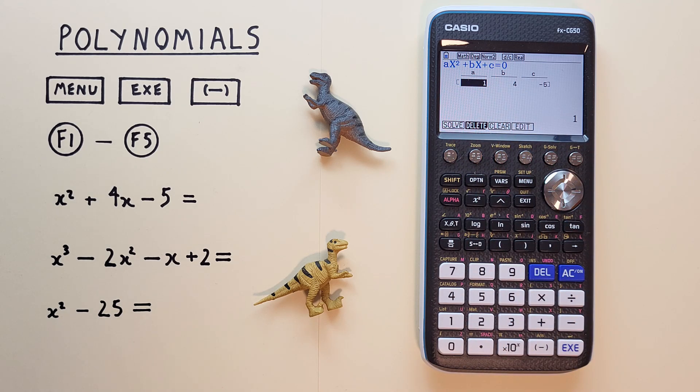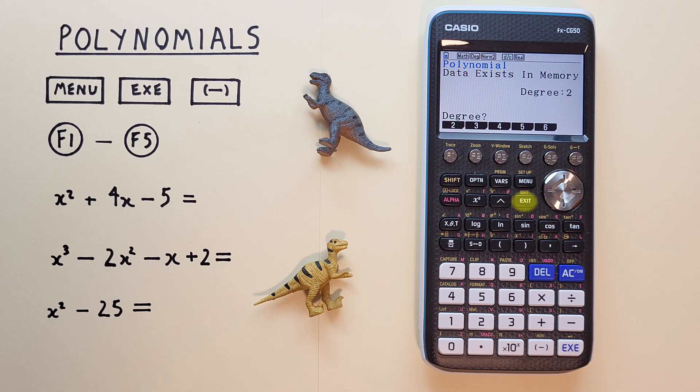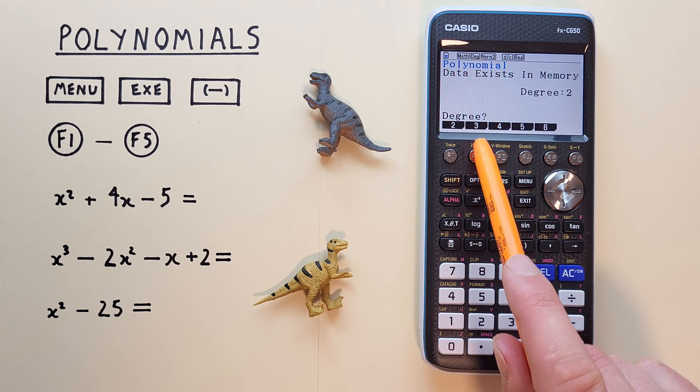How about another equation? Let's look at x to the power of 3 minus x to the power of 2 minus x plus 2. To go back to our polynomial menu, we can just hit exit. So for our new equation, we have x to the power of 3 as the largest power. So for our degree, we choose f2, 3.